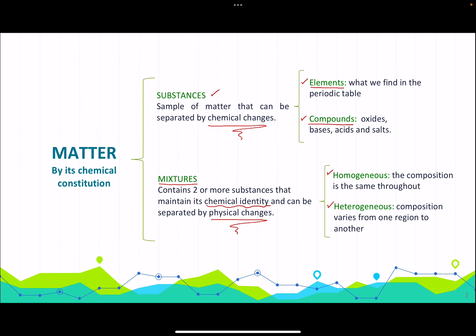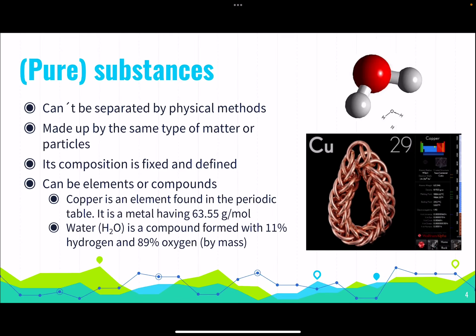In mixtures, we have homogeneous mixtures, where the composition is the same throughout, and heterogeneous mixtures, where the composition varies from one region to another. Let's start with substances — sometimes called pure substances. They can be separated by physical methods such as evaporation, crystallization, or magnetization. They are made up of the same type of matter or particle, and their composition is fixed and defined. They can be elements or compounds.